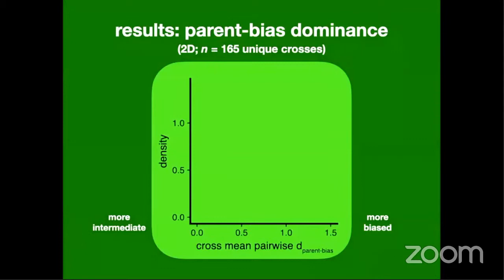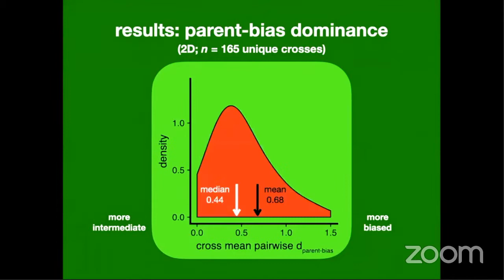For pairs of traits at a time, looking at the 2D pairwise parent bias metric with 165 crosses, a value of zero means hybrids resemble both parents equally and a value of one means they completely resemble one parent. The mean is 0.68 and the median is about 0.44. Hybrids are not exactly intermediate between parents when looking at trait pairs; rather they resemble one parent about 50 percent more than the other.